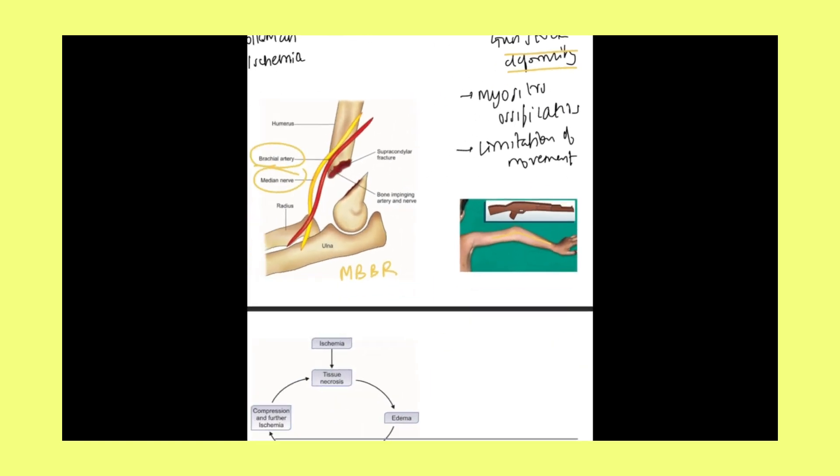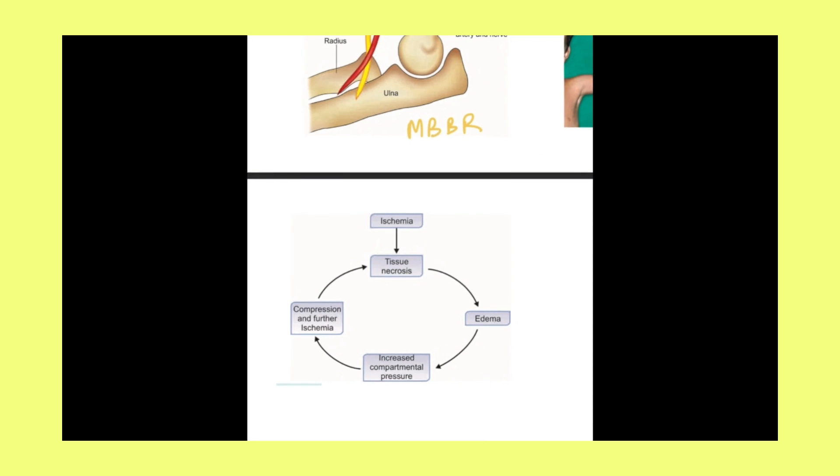This is the mechanism of Volkmann ischemia. Ischemia occurs, leads to tissue necrosis, leads to edema, which leads to increased intracompartmental pressure, which leads to compression, and further ischemia, further tissue necrosis. This is a vicious cycle which keeps on continuing.